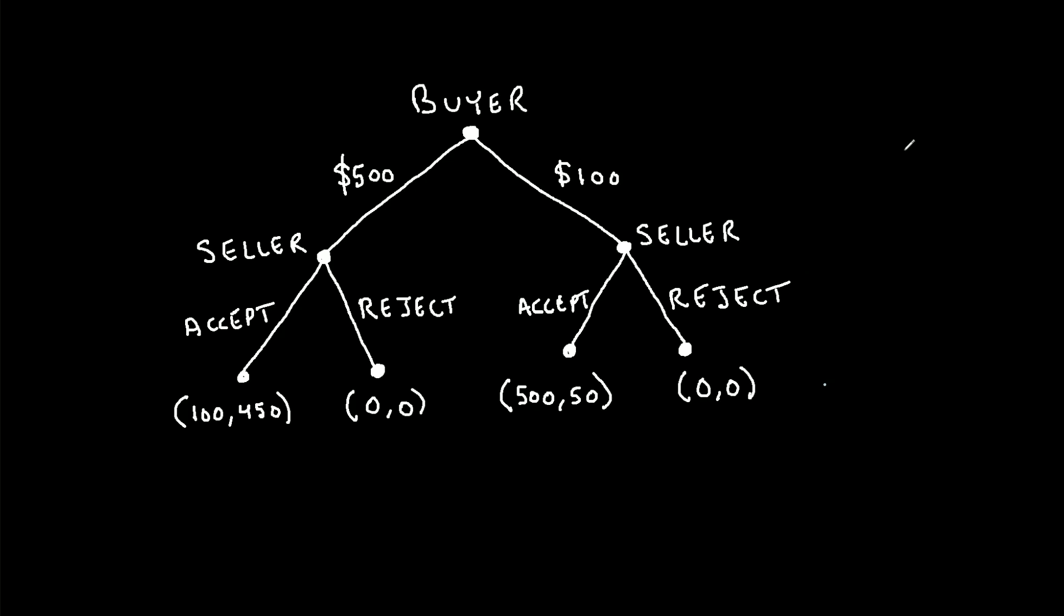Now, this type of game is referred to as a sequential moves game, because we have players who make their moves sequentially. In other words, one player makes a move, and then the other player, after observing the move of the first player, they decide on the move that they want to make. So this is different than a simultaneous moves game, in which players make their moves simultaneously and independently.